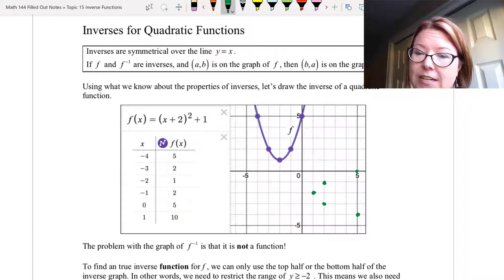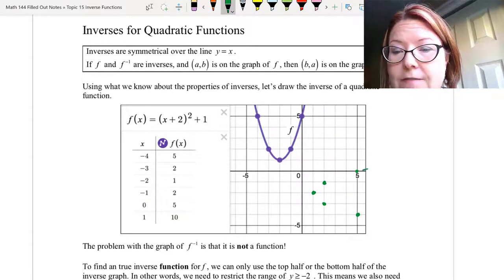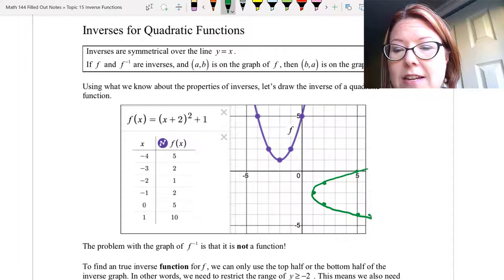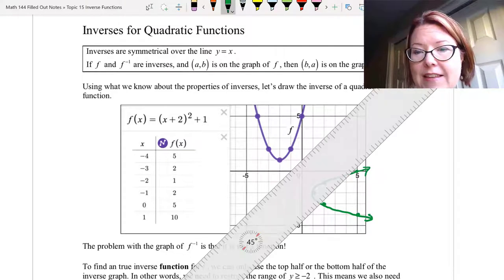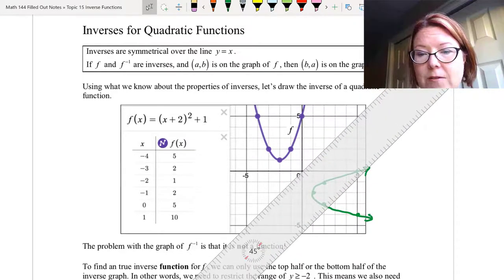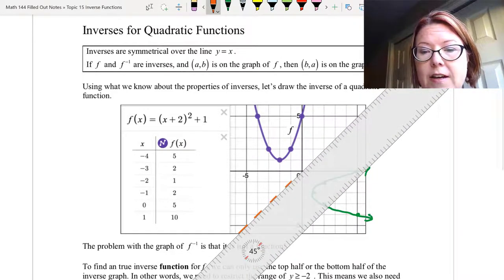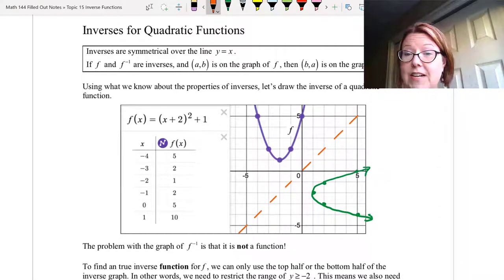Now the resulting graph is the graph of a quadratic function, but it's on its side and opening up to the right. It does look like a nice inverse for the graph of f. In fact, we could add that y equals x line and take a look at it. Adding that dashed line y equals x looks very nice. They are symmetrical over that line.